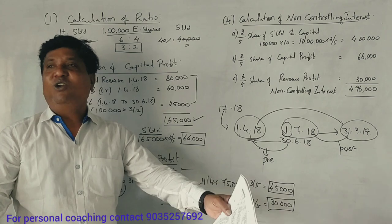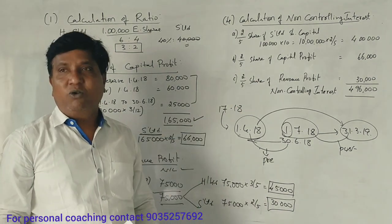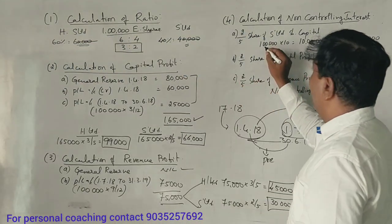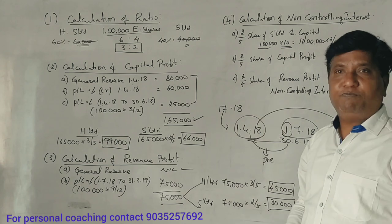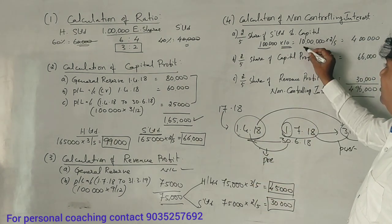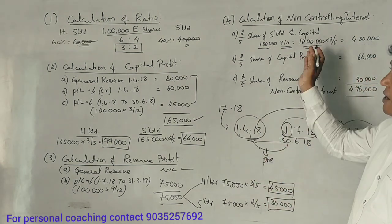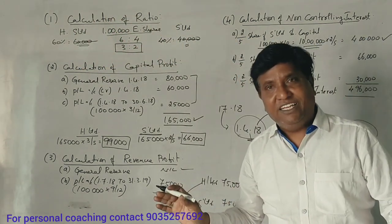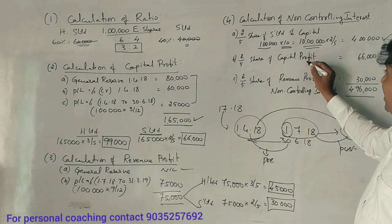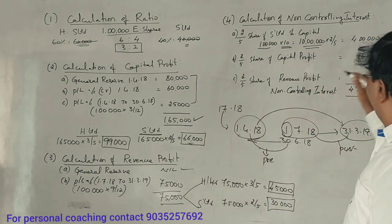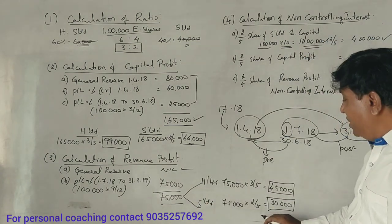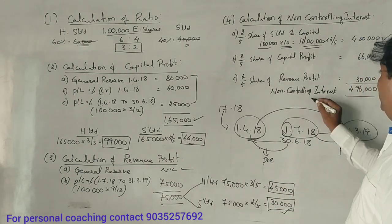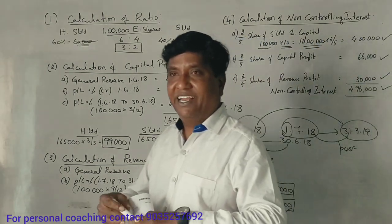Calculate non-controlling interest. S company 1 lakh shares. H company 60% purchase, S company 40,000 shares. S company capital profit share 66,000. S company revenue profit 30,000. Total non-controlling interest 4,96,000.